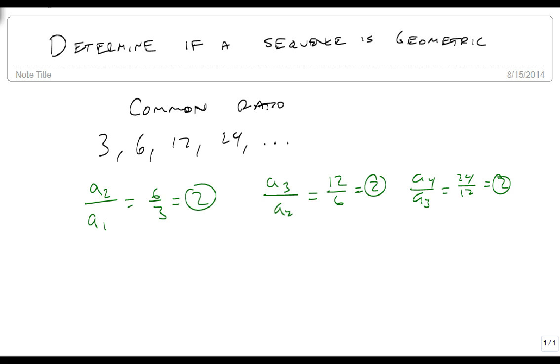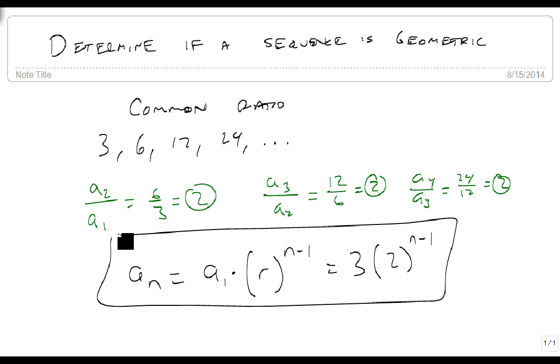that means we have found our common ratio. All geometric sequences look like an equals a1 times r to the n minus 1. So in this case, a1 is 3, so we get 3 times 2 raised to the n minus 1. And for this problem, this is our geometric series. We've found our common ratio, and we know it's geometric.